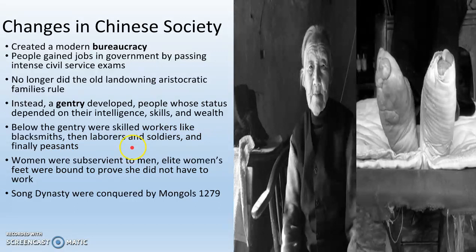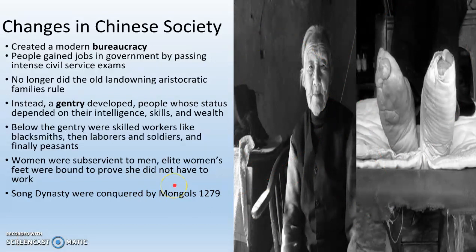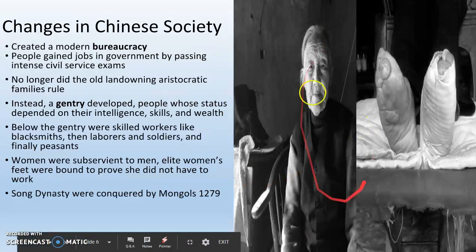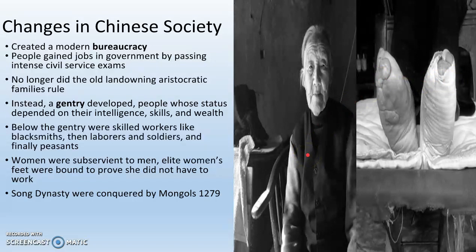Women are subservient to men in pretty much all ways in this society. This is when foot binding was created. Elite women's feet were bound — this was supposed to be a status symbol. If your feet were bound, you couldn't walk, and this proved you were wealthy and could use money to take care of yourself. Foot binding continued in China into the 1920s and 1930s and has largely been banned now. Basically, feet were bound so tight they grew into a ball so you couldn't use them — pretty disgusting and sad for women who spent their entire lives sitting, laying down, or being carried around.